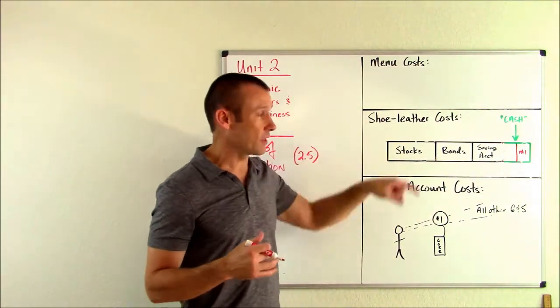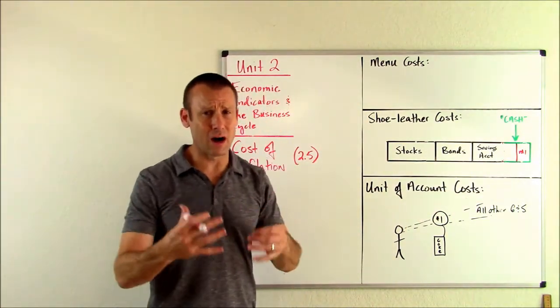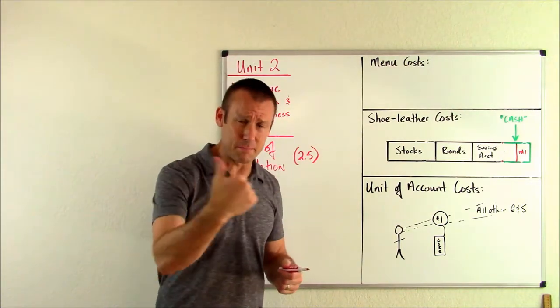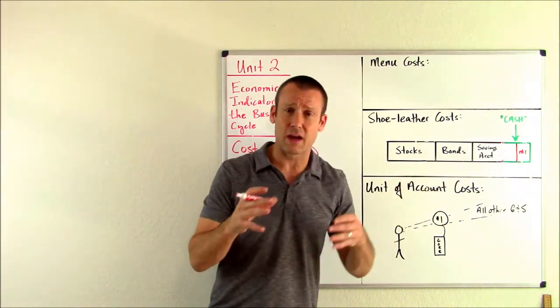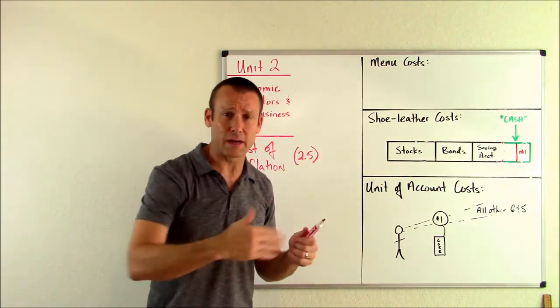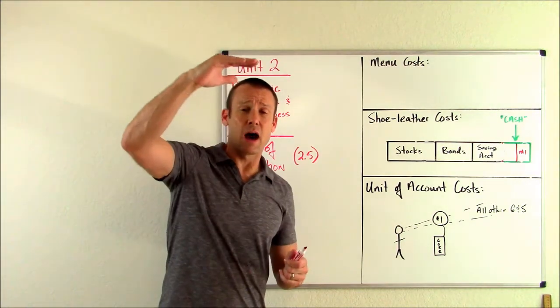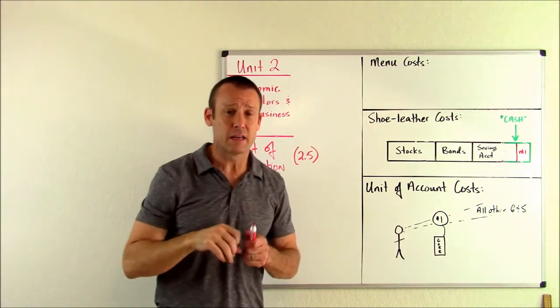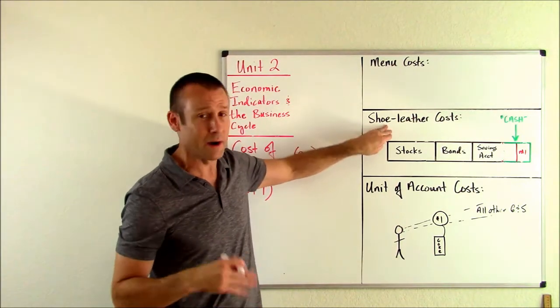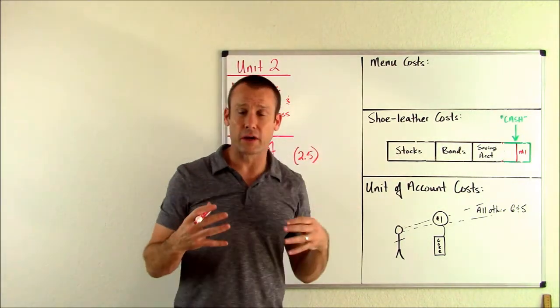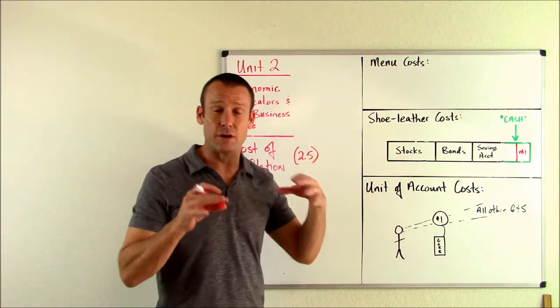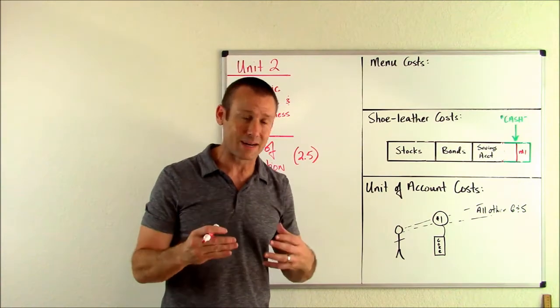Now, why is it called shoe leather cost? Well, before online or internet banking, we used to literally have to go to the bank and manage our wealth between these types of financial assets. And that was what we meant. It was that continually going back to the bank. Inflation starts going higher and higher and higher in the society. People are going to have to go to the bank more and more often and are truly wearing out the shoe leather. There's shoe leather on their shoes. So that was the idea there. So that's that cost, another waste, a waste of resource time.